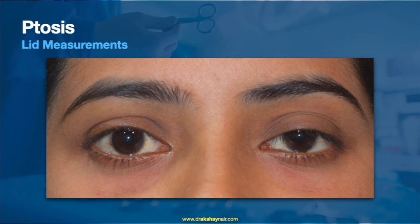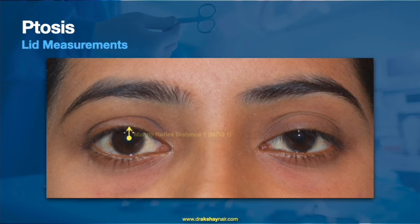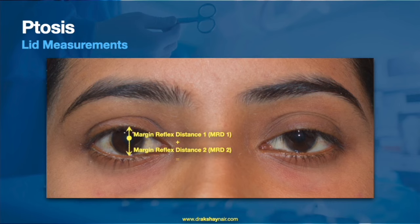The distance between the lower eyelid margin to the highest point on the upper eyelid margin is called the palpable fissure height, which has two components. The first is the distance from the central corneal reflex to the highest point on the upper eyelid, known as marginal reflex distance 1 or MRD1. Similarly, the distance from the central corneal reflex to the lower eyelid margin is MRD2. Therefore, MRD1 plus MRD2 equals the palpable fissure height. Measurements should be taken at the same sitting for both eyelids for direct comparison.